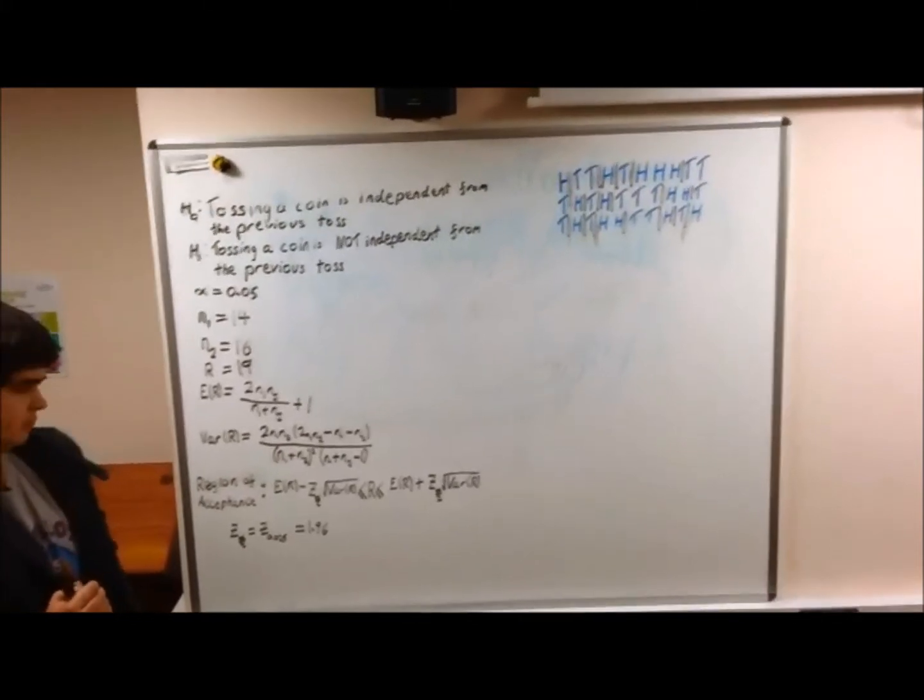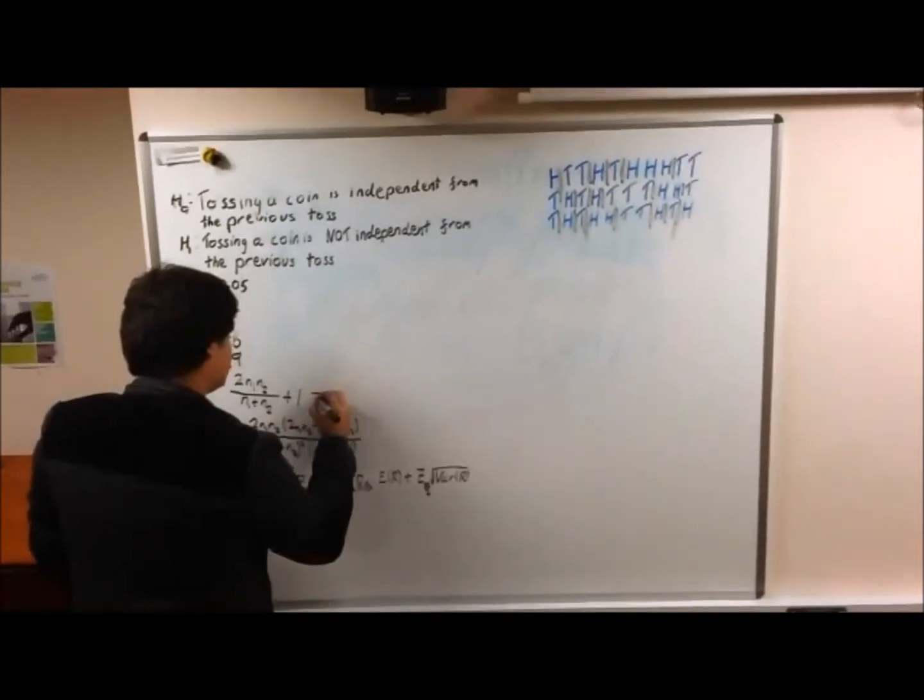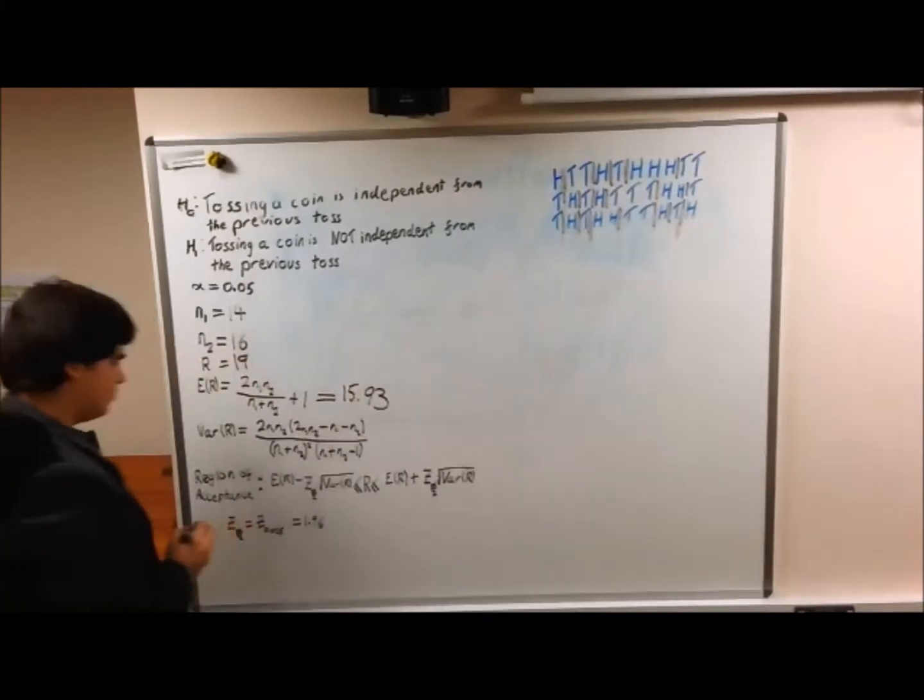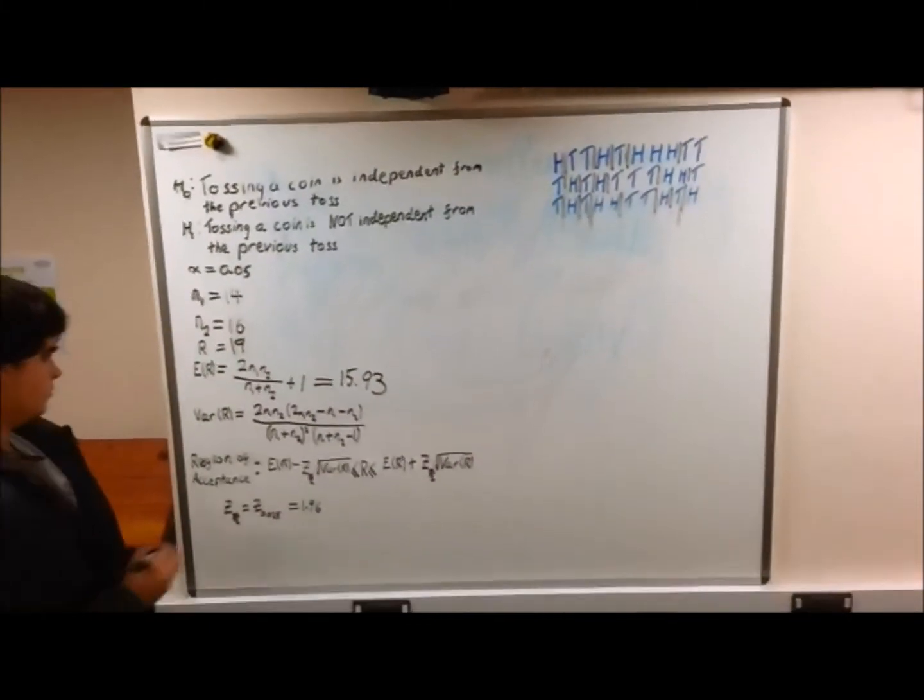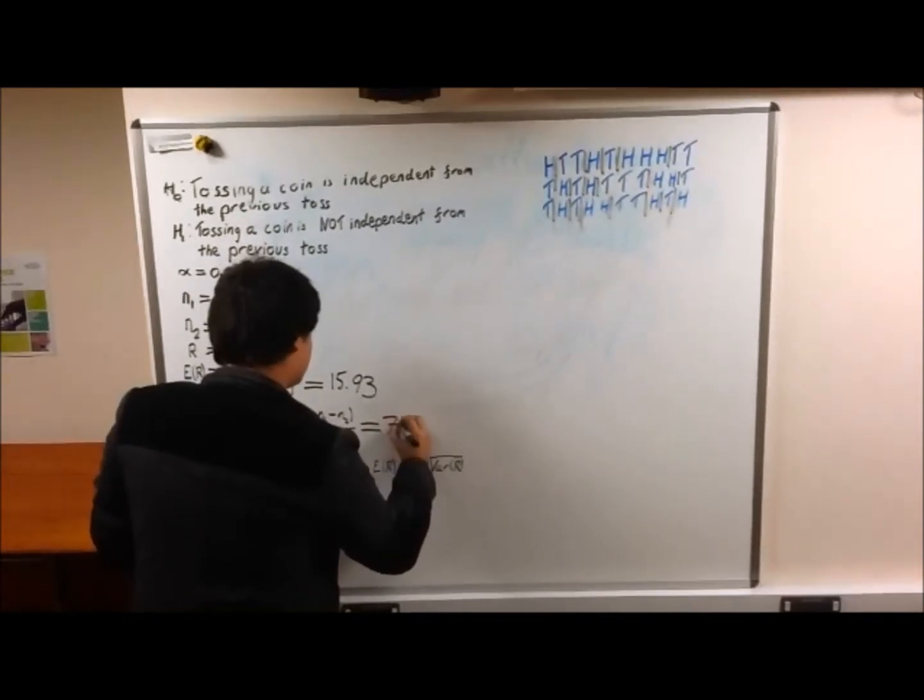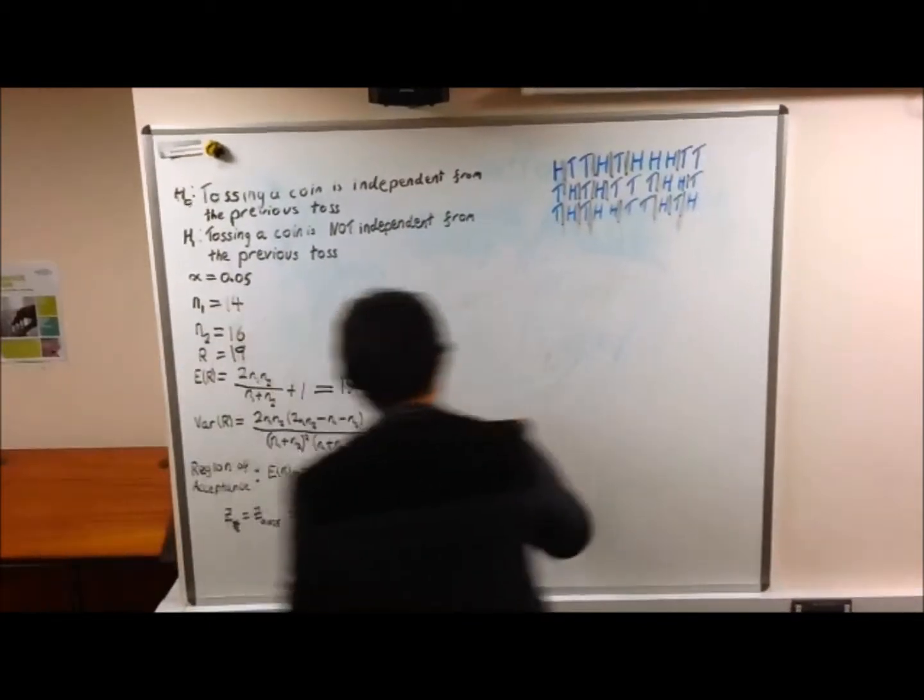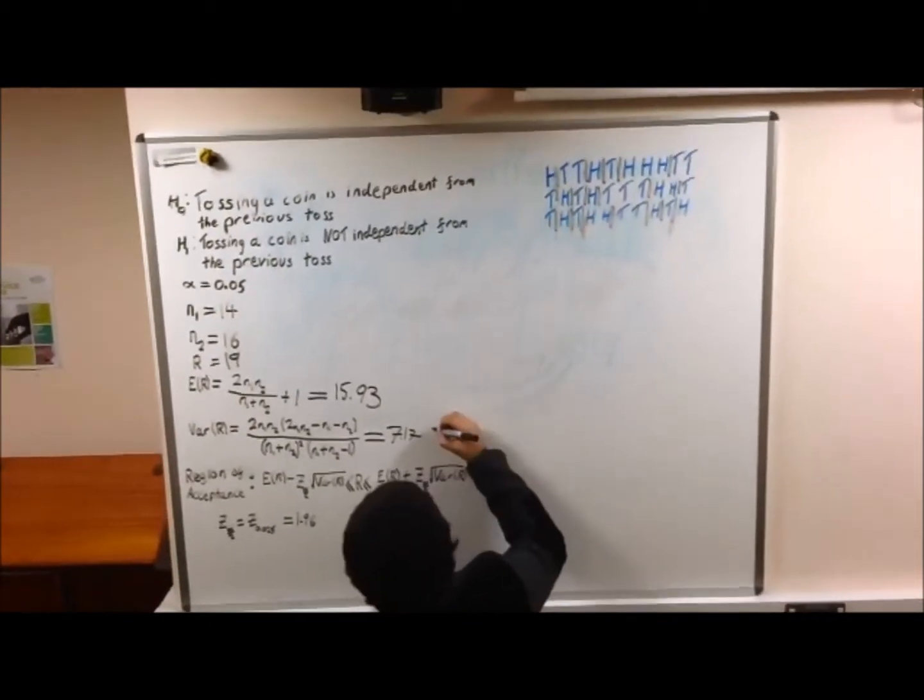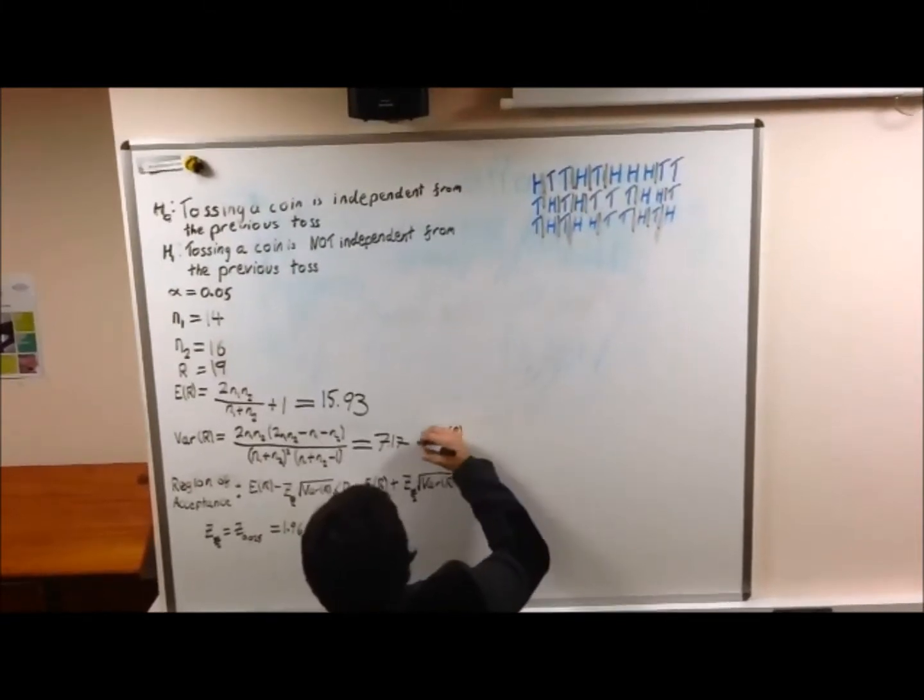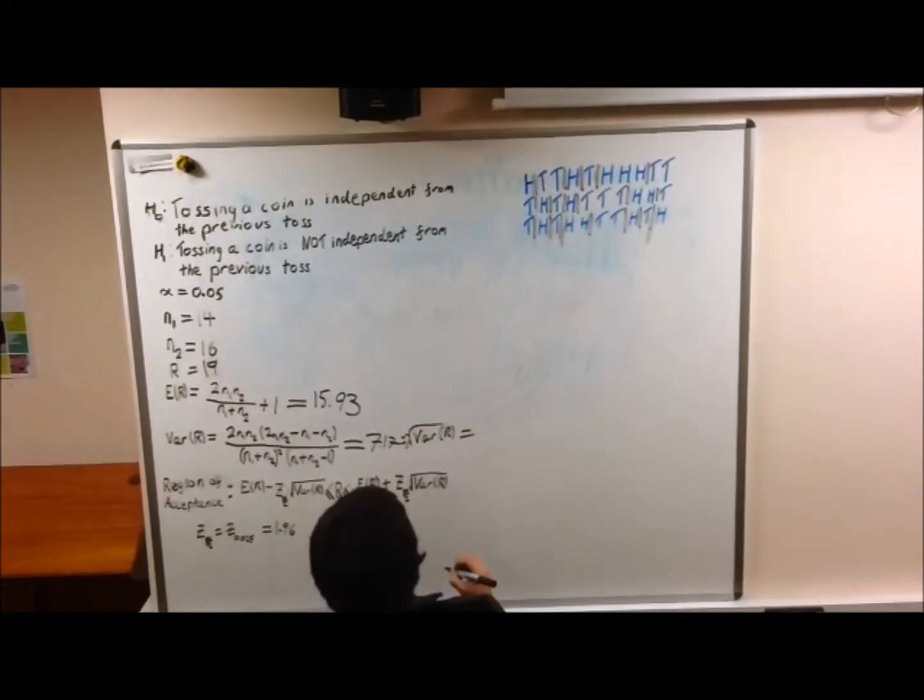The values for the expected value of R was 15.93, and the variance of R is 7.17. We then square root this to get 2.68.